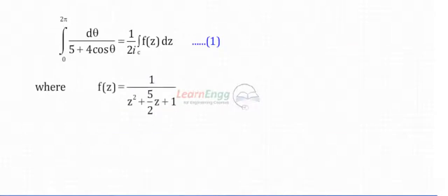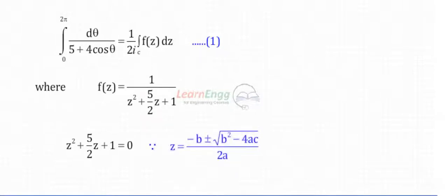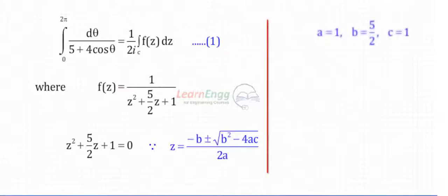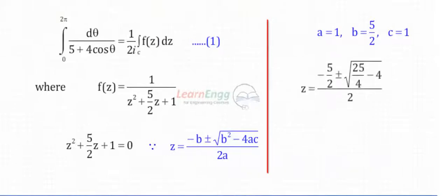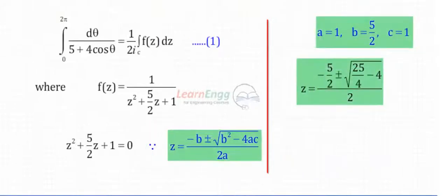Take z² + (5/2)z + 1 = 0. Here a = 1, b = 5/2, c = 1. By substituting the values and simplifying, we get the roots.